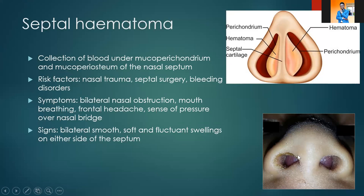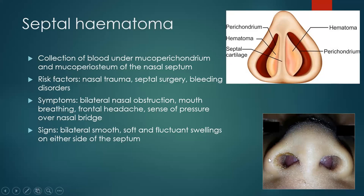A patient will come in with bilateral nasal obstruction, mouth breathing, frontal headache, and a sense of pressure over the nasal bridge — they feel like the nasal bridge is falling off. On examination — nasal exam and anterior rhinoscopy — we find bilateral smooth swellings that are soft and fluctuant on either side of the septum.